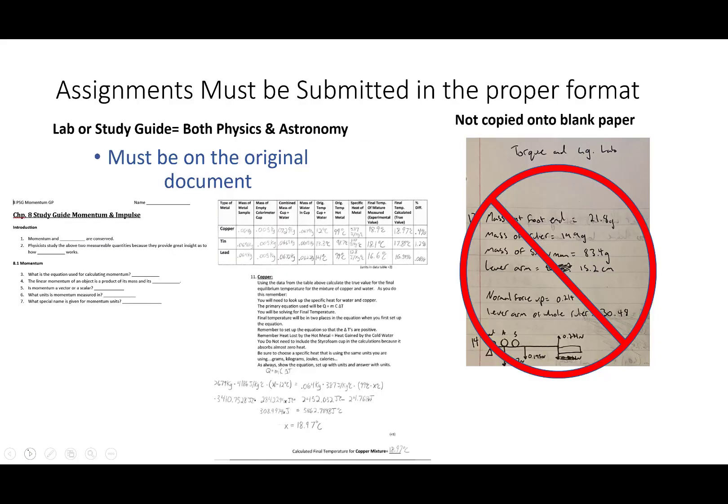Now in both my physics and astronomy classes there are going to be labs and study guides. Those labs and study guides need to be in the original document format. So for a study guide it is a question and fill-in-the-blank answer. Labs you're going to be asked to put in data and do some calculations and those must be in the original format that they were given to you.